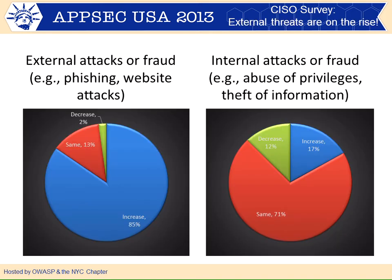This is a sneak preview for AppSec US. The first finding — while somewhat obvious, still worth stating — is that external threats are on the rise. CISOs were very unanimous: 85% saw an increase in external threats like phishing and website attacks, compared to insider threats, internal attacks, and fraud, which most would say are fairly stable. So people saw a clear shift towards more external risks.